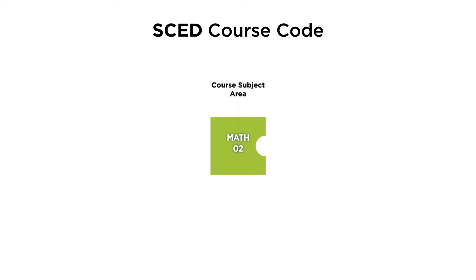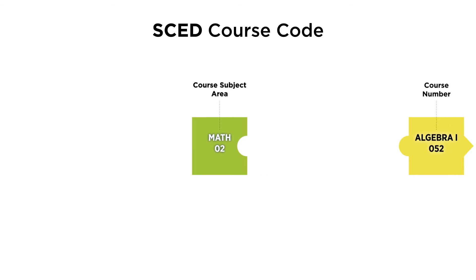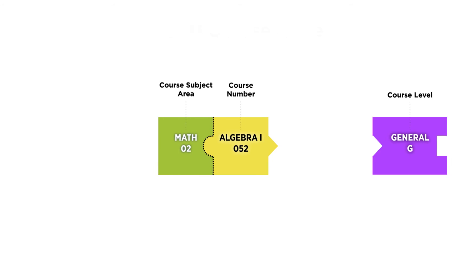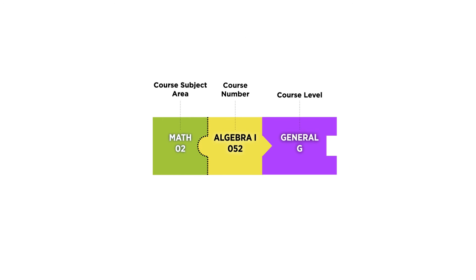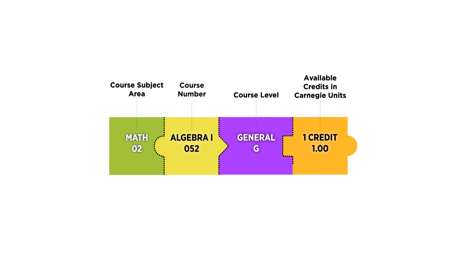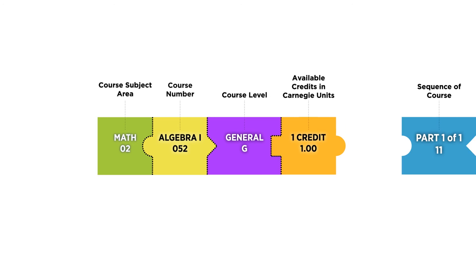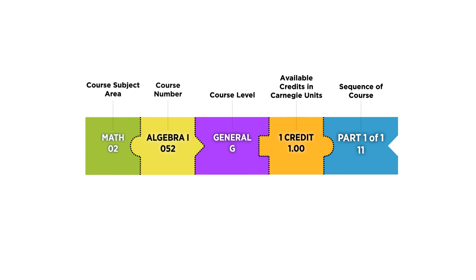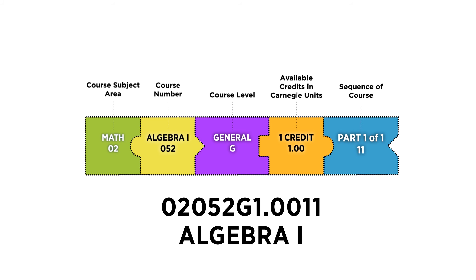The first two digits indicate the course subject area, and the next three designate the course number. Part three of the SCED identifier is the course level, which indicates the course's level of rigor. Part four is available credits in Carnegie units, and part five is the sequence of the course. Now we have a complete SCED identifier for Algebra 1.